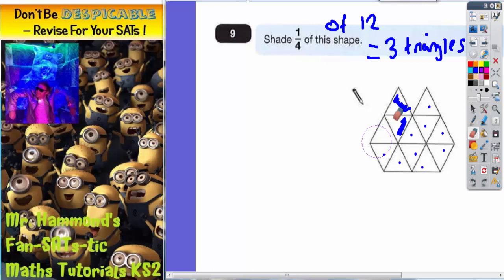Or we can actually shade in three triangles that are totally separate. So we can shade in that one, that one, and that one. That would also be a correct answer. One final example, again picking three random triangles.